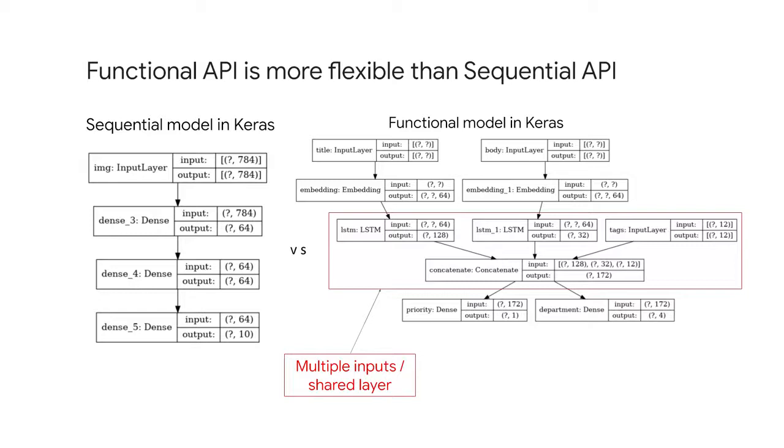Here's a very simple example. Let's say you're building a system for ranking custom-issued tickets by priority and then routing them to the right department. Your model could have these four inputs: the title of the ticket, that's a text input; the text body of the ticket, also a text input; any tags added by the user, categorical input; an image representing different logos that could appear on the ticket.